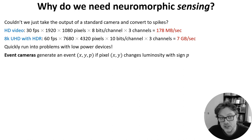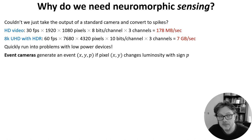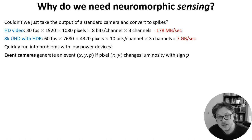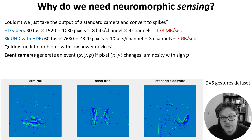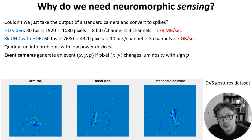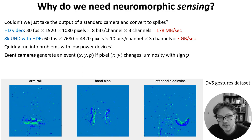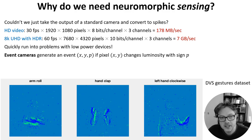Event cameras are one solution to this problem. They noted that most pixels don't change very much in a scene from frame to frame — and that's also the basis of video compression algorithms. Event cameras take this to the level of sensing: they only transmit an event when the underlying pixel changes. These images are from the Dynamic Vision Sensor gesture dataset and give you an idea of what the output of these cameras looks like.